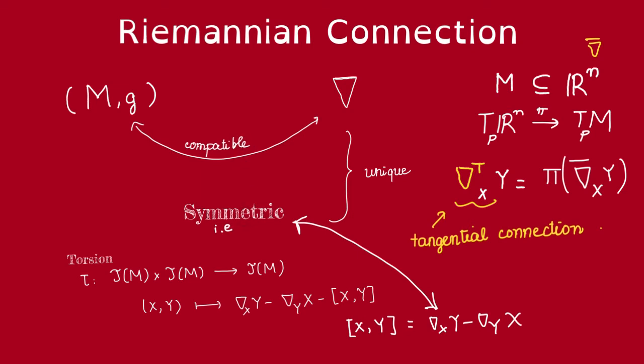These two conditions uniquely determine the tangential connection on an embedded sub-manifold of R^n. However, it turns out that being an embedded sub-manifold of R^n is not such a special condition after all. By a theorem of John Nash, every Riemannian manifold can be realized as a sub-Riemannian manifold of some Euclidean space.